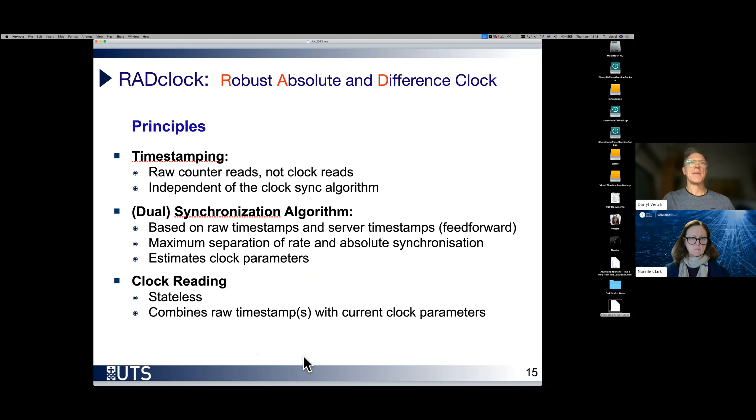RADclock stands for robust, absolute and difference clock. Focusing, as I mentioned before, on the importance of separating out these two roles. When it comes to time stamping, it focuses on those raw counter reads. Not reading its final clock, but reading raw counter. Those reads are independent of the clock synchronization output. So you cut out an important source of feedback, which could create problems. It's the dual synchronization algorithm because it maintains a difference clock and an absolute clock.